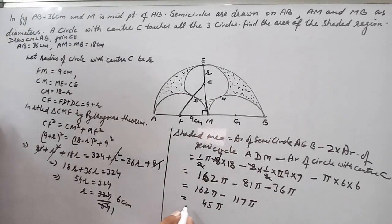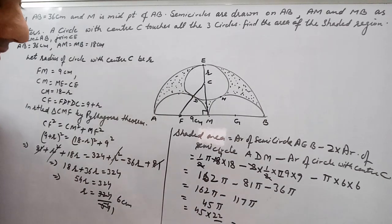Or we can fill the value of π also. 45 × 22/7, so if you multiply we get 990/7.